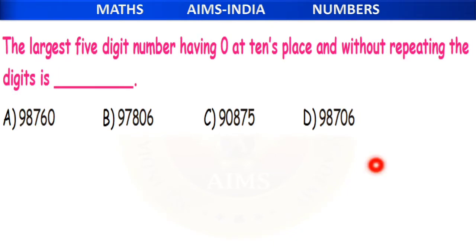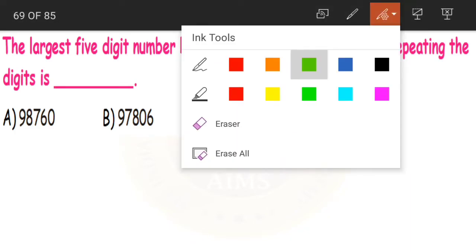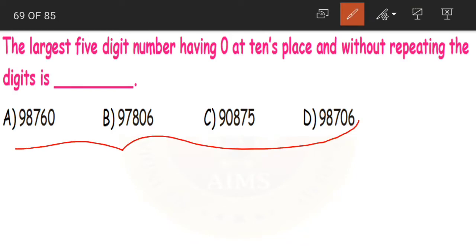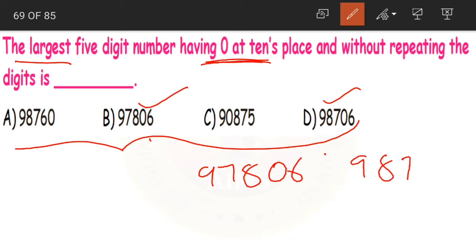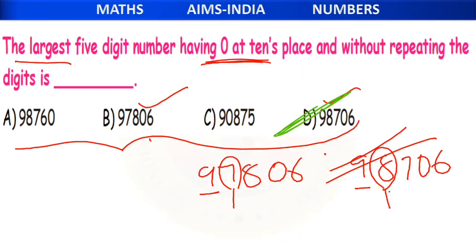Next: the largest 5-digit number having 0 at the tens place and without repeating digits is dash. Looking at the options, B and D have 0 at the tens place. Comparing 97,806 and 98,706 — the first two digits are the same, but the third digit is 7 vs 8. Since 8 is larger, 98,706 — option D — is our largest 5-digit number.